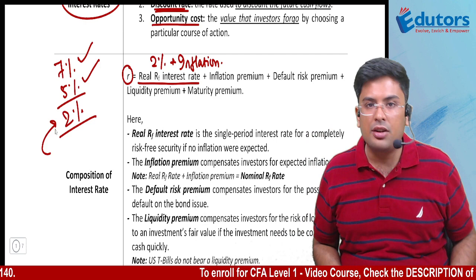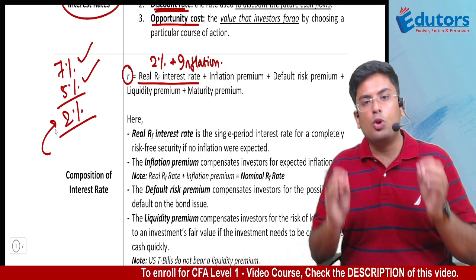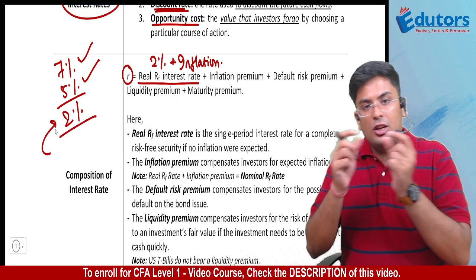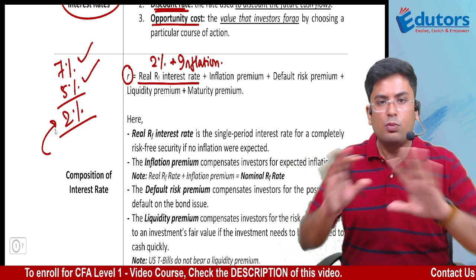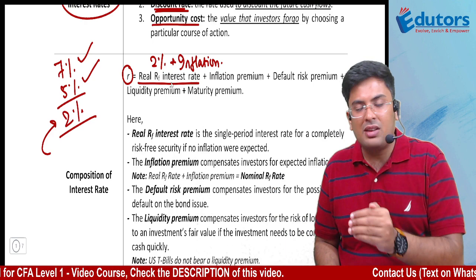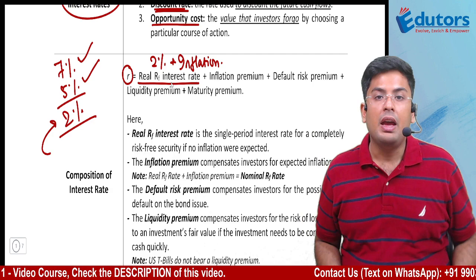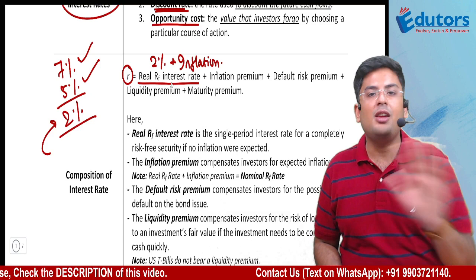What we are getting after removing the inflation premium is our real risk-free rate. Government securities are commonly used to represent this rate — the return on such securities is considered the real risk-free rate. They are called risk-free because they are backed by the government, and anything backed by the government is considered virtually risk-free. T-bills issued by the government thus offer the risk-free rate, and if inflation premium has not been added, it is a real risk-free rate.